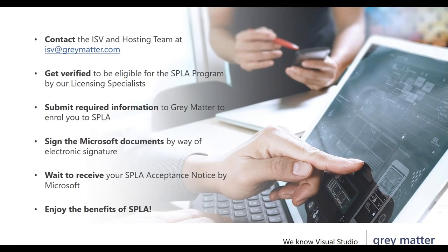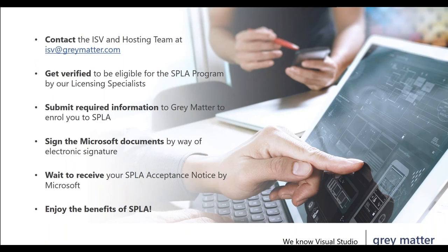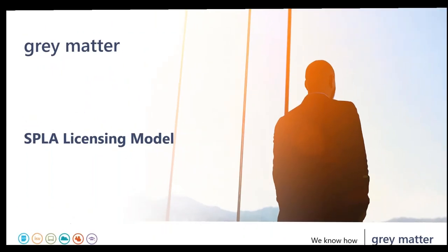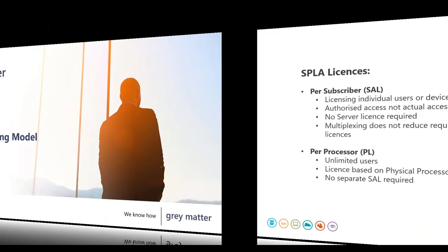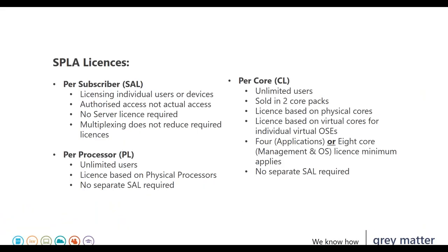To participate in SPLA, contact the ISV and hosting team at Grey Matter at isv.greymatter.com. You'll need to be verified by a licensing specialist, submit required information to Grey Matter to enroll, and sign documents through the electronic agreement portal. Once you receive your SPLA acceptance notice, you can enjoy the benefits of SPLA. If you have any issues, you can call us directly.